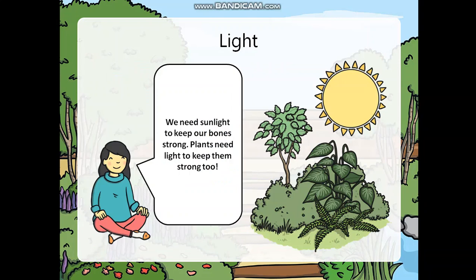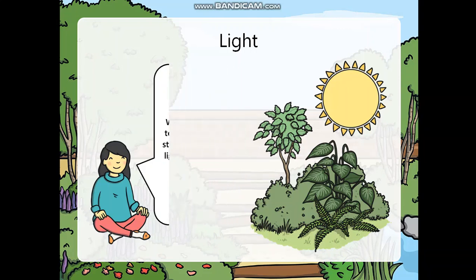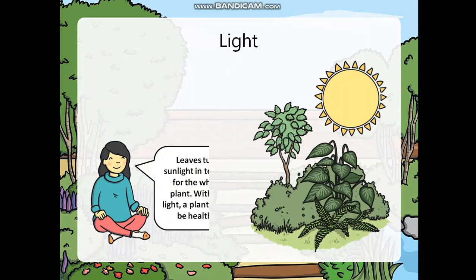We need sunlight to keep our bones strong. Plants need light to keep them strong too. Leaves turn sunlight into food for the whole plant. Without light, a plant won't be healthy.